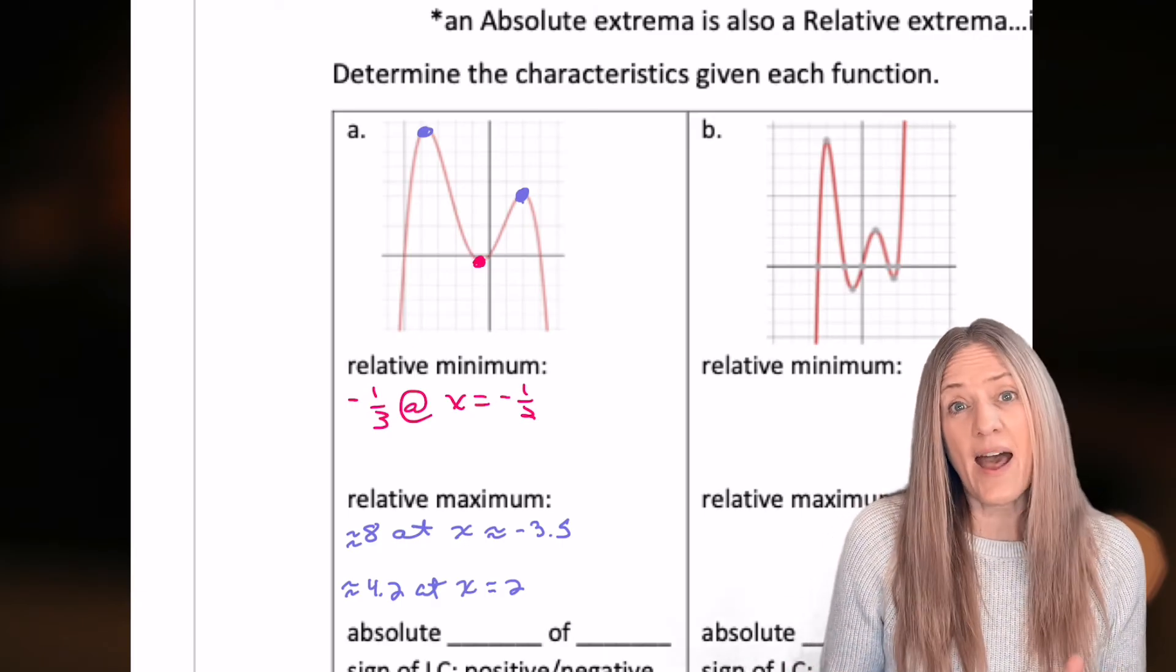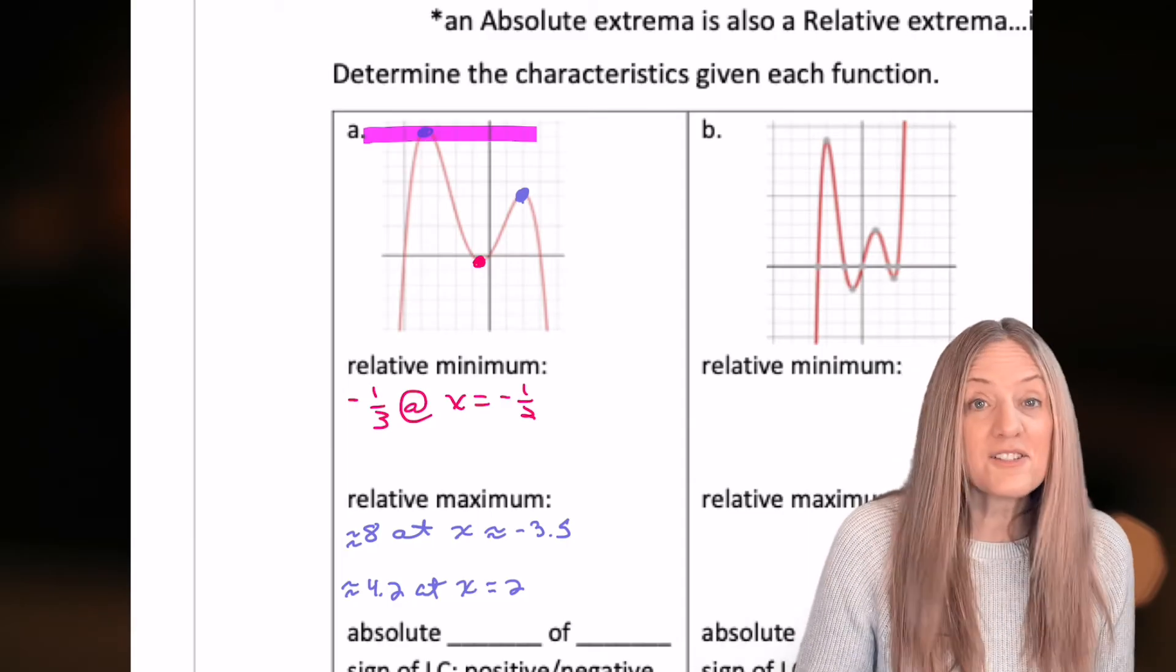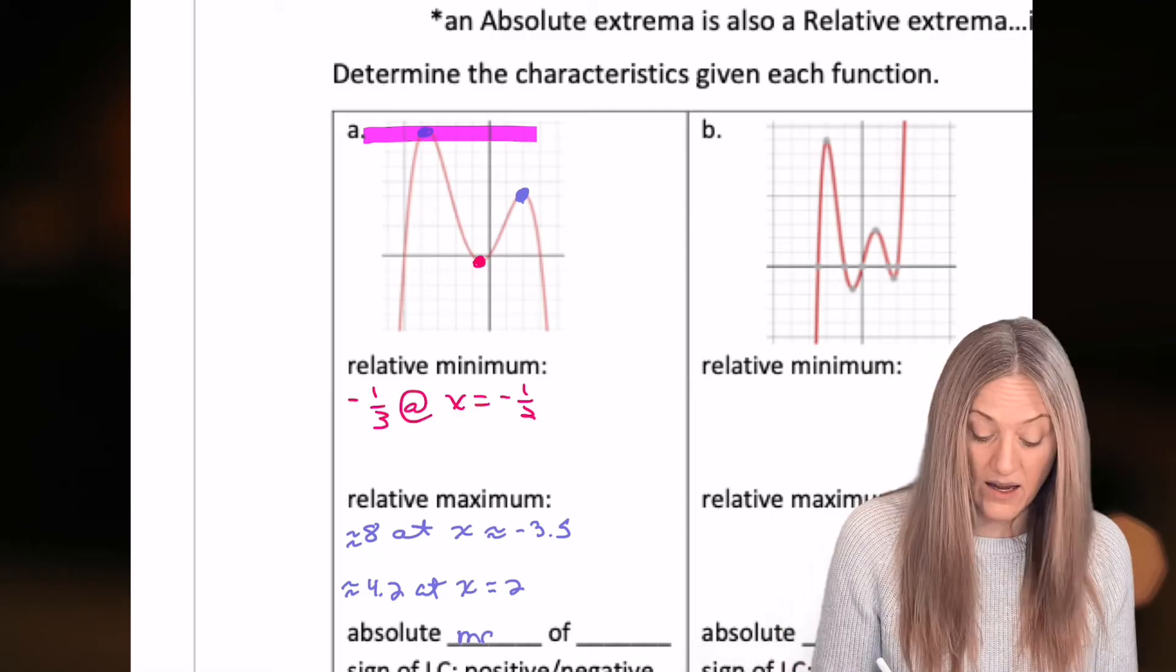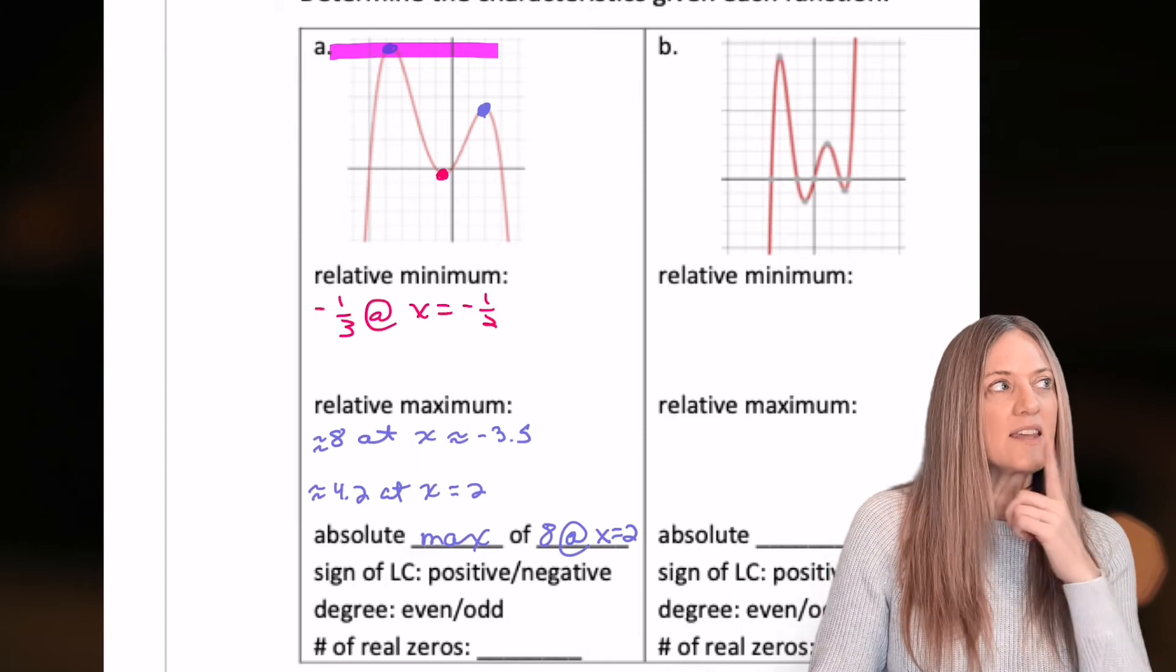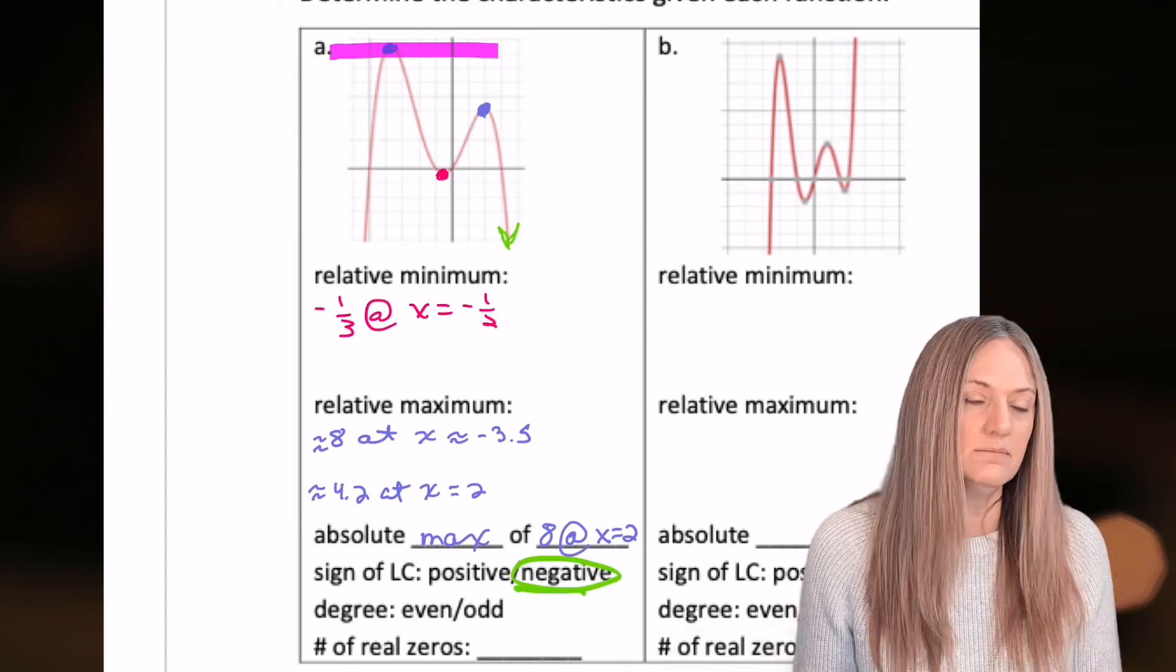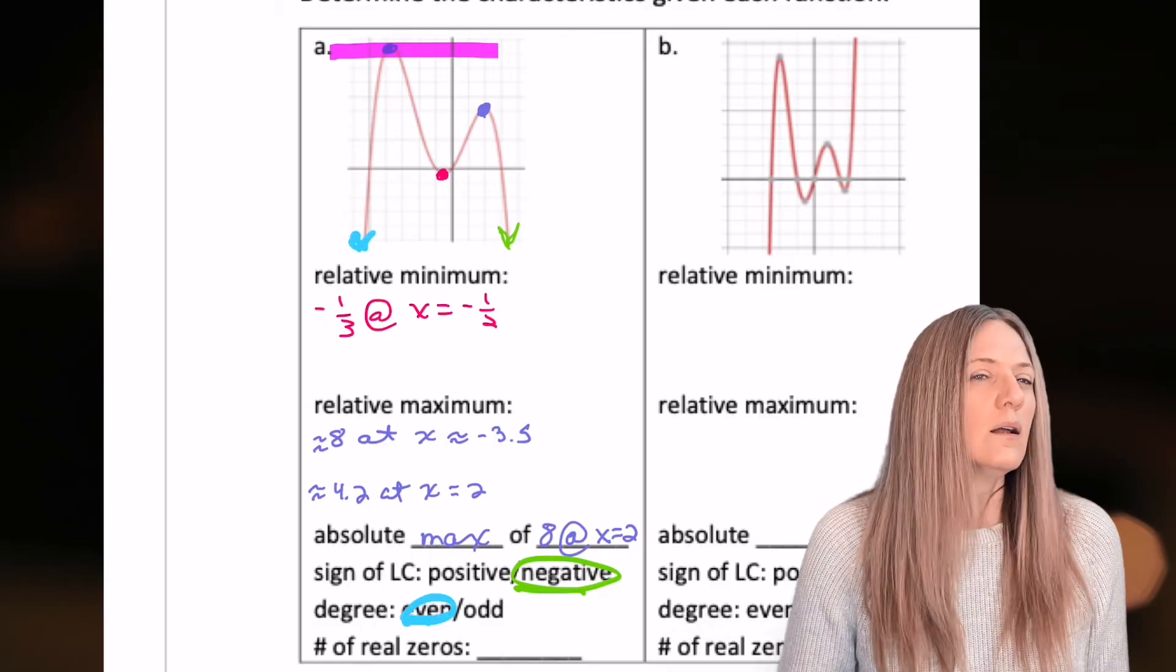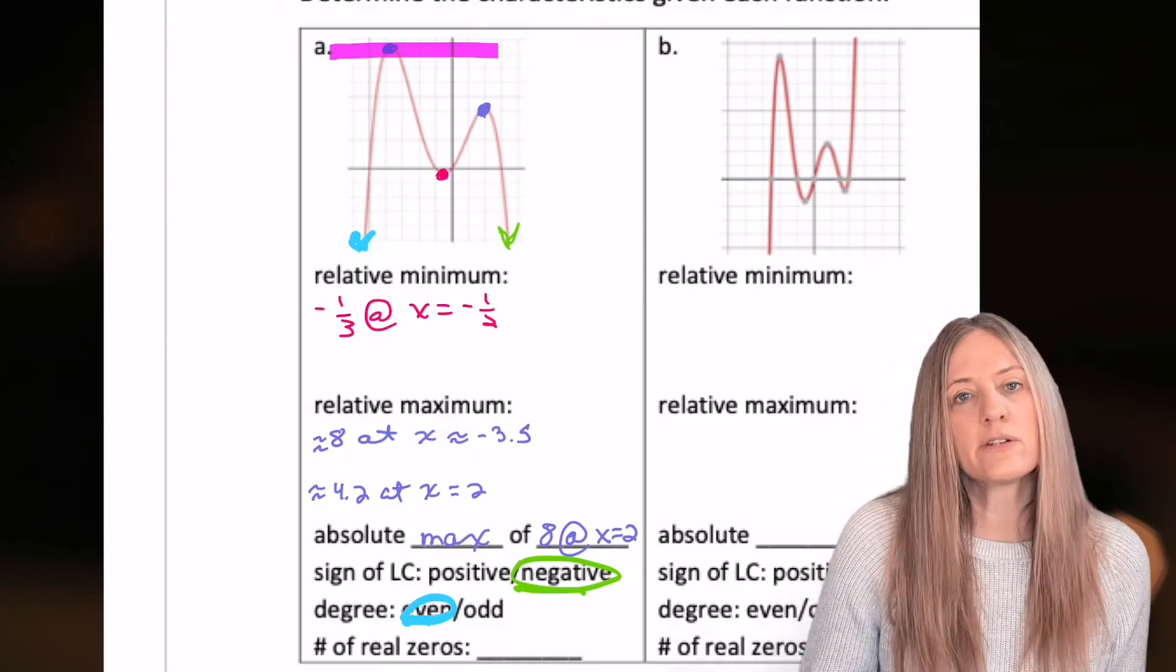Let's talk about that absolute. Is there a ceiling? Is there a floor? Looks like there's a ceiling. So that means we have an absolute max of 8. Almost there. Sign of the leading coefficient. Well, that's the end of the story. Looks like it's down. So we know it has to be a negative. Is the degree even or odd? Let's see. It starts down. That's the same. Therefore, the degree is even.